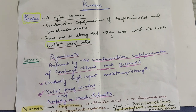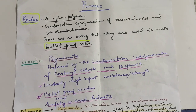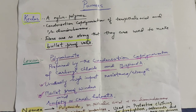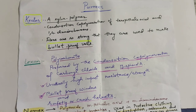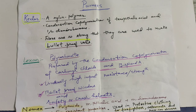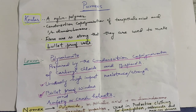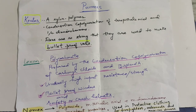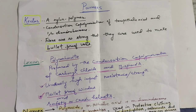Nomex is a polyamide formed by mixing monomers isophthalic acid and meta-diaminobenzene. It has fire-resistant properties and is used in protective clothing for firefighters, astronauts, and race car drivers.